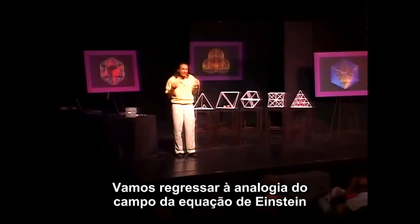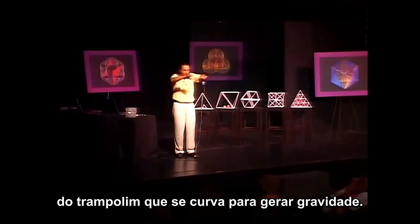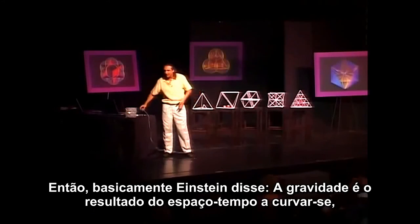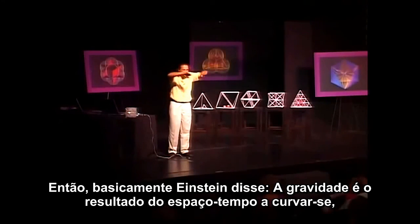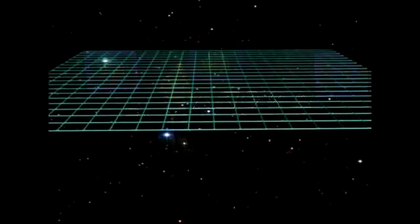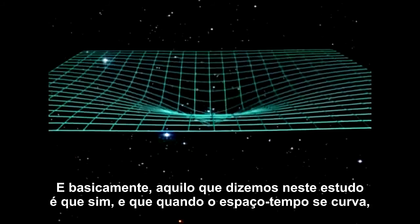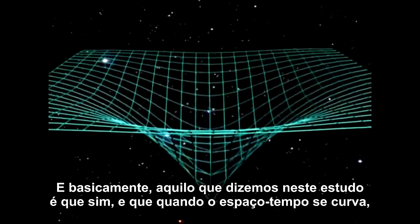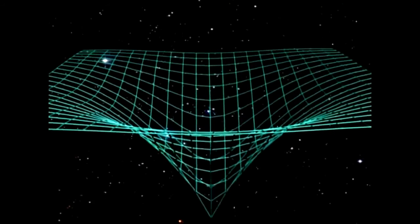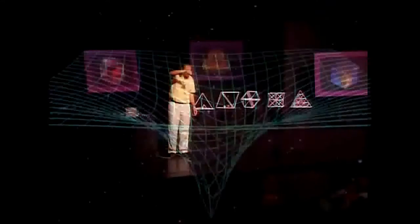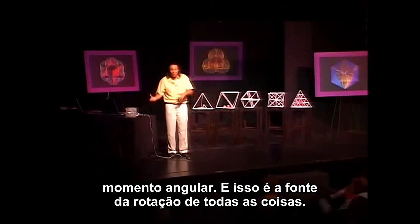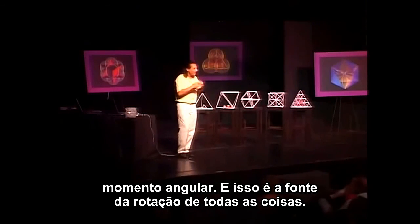Let's go back to the analogy of Einstein's field equation of the trampoline — the trampoline curving to generate gravity. Einstein said gravity is the result of space-time curving, like the surface of a trampoline. What we say in this paper is: yes, and when space-time curves, it doesn't just curve — it curls, just like water going down the drain. And that generates spin, angular momentum. That is the source of the spin of all things.